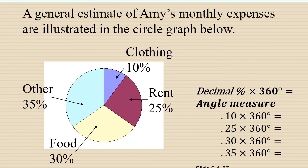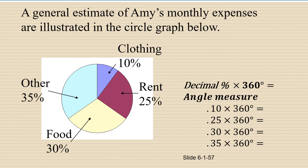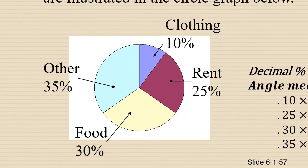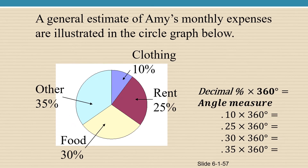So let's look at an example. A general estimate of Amy's monthly expenses are illustrated in the circle graph below. Clothing is 10% of her expenses, rent is 25%, food is 30%, and the rest is 35%.